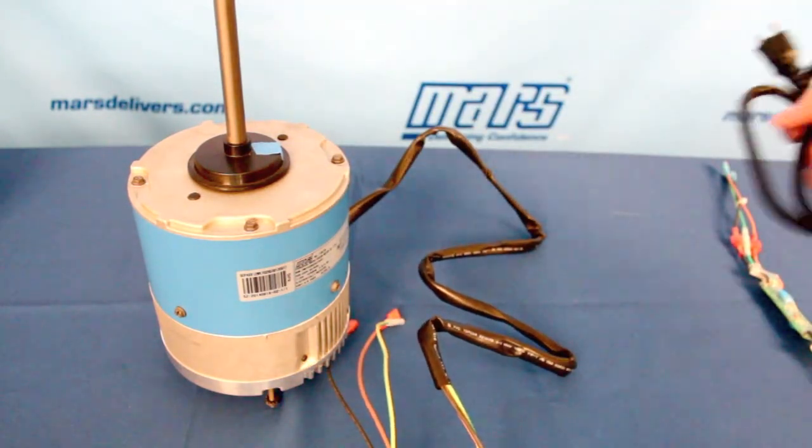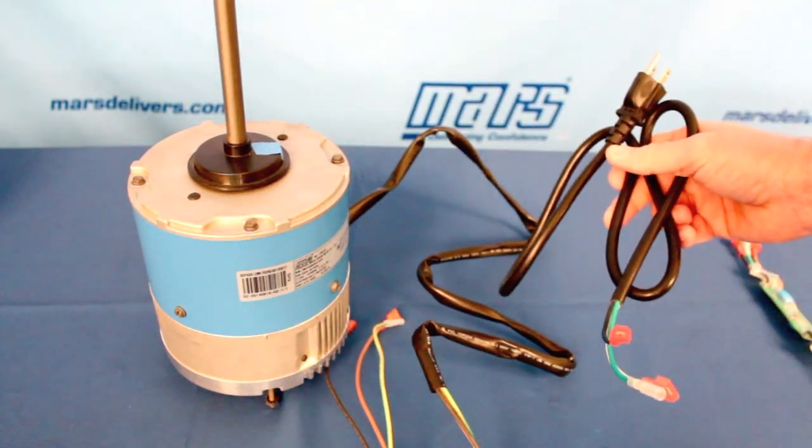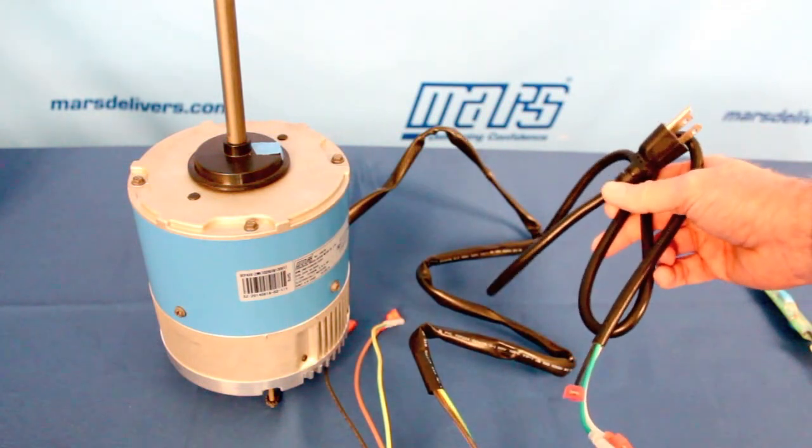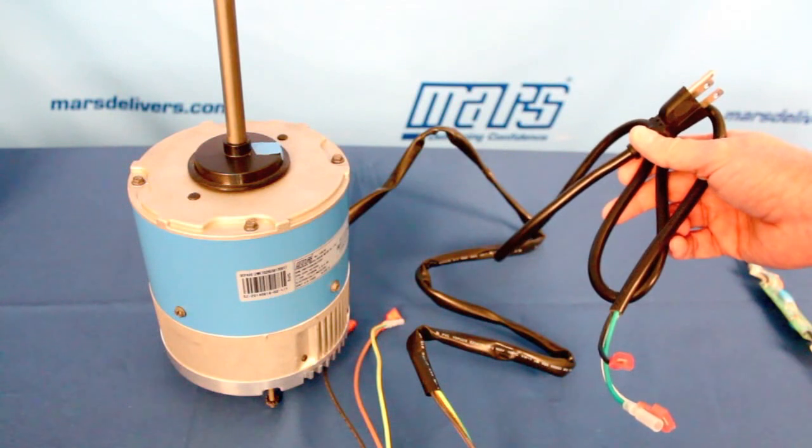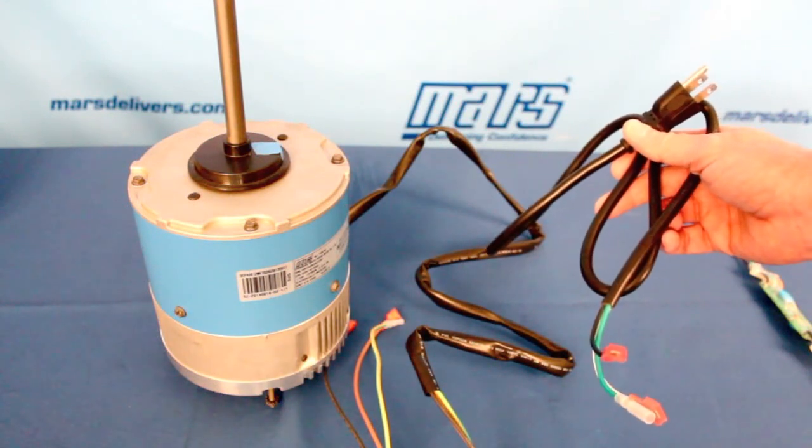The third and final item is the harness that's used to actually establish the rotation and speed of the motor. We're going to plug this motor into a 115 volt power source and let it cycle through four different iterations.